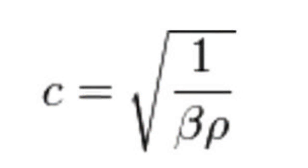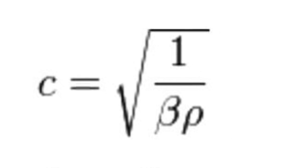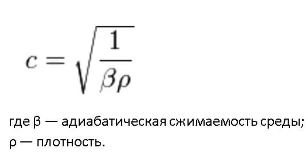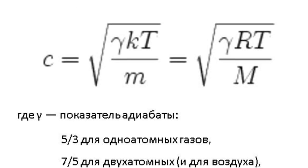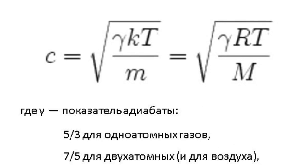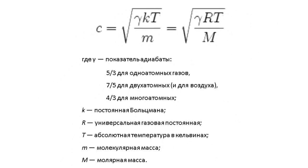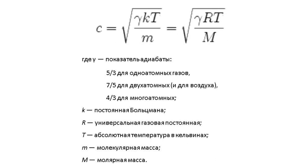The formula of sound speed for any medium is as follows: speed c equals the square root of the bulk modulus divided by adiabatic compressibility multiplied by the density of the substance. The formula can be somewhat modified for gases — for instance, speed can be expressed in terms of temperature and molar or molecular weight.